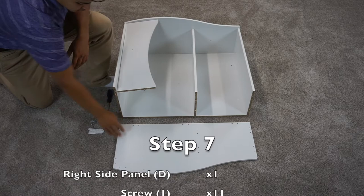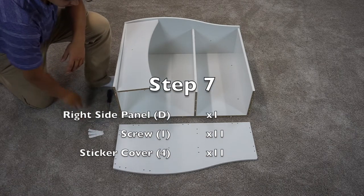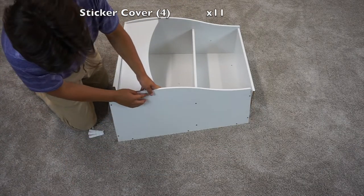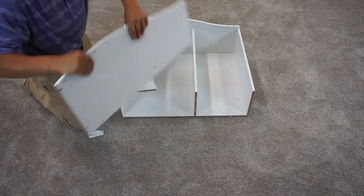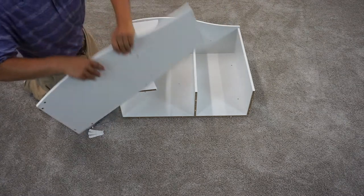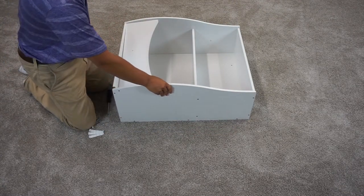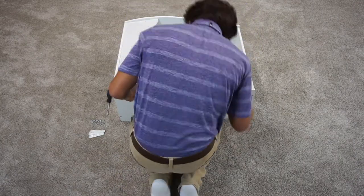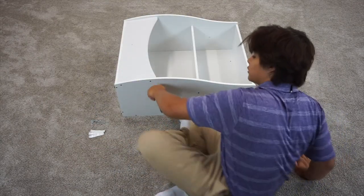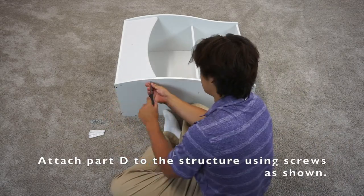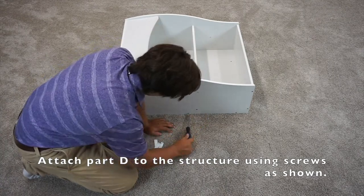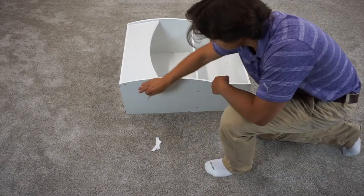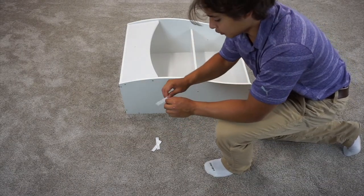For step seven you're going to want to take your D panel, eleven screws, and eleven cover stickers. You want to align this D panel so that the holes with a little bit of an indention are facing out away. Another way to know this is that there are more holes on this side and you want these facing towards the wood dowels. Then align all your pieces and then screw it in. Once you've screwed in all eleven screws you can begin to add the cover stickers.